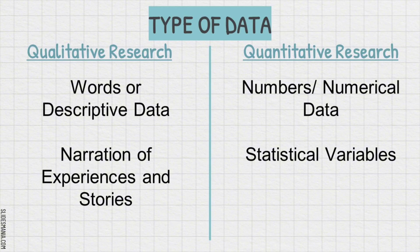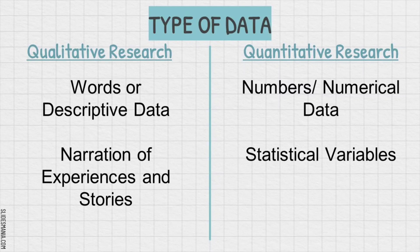Therefore, qualitative research uses descriptive data, which means the data is expressed in words, images, or observations. This type of research focuses on understanding experiences, behaviors, or social phenomena in depth. The data is non-numerical and often involves descriptions, interviews, case studies, or narratives. Examples of data in qualitative research are interview transcripts, field notes, and photos.